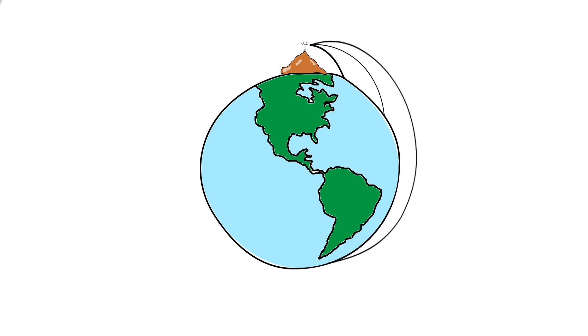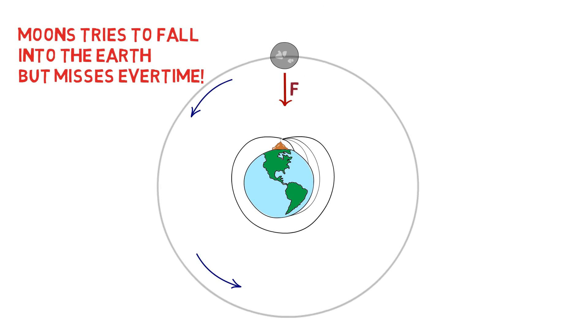If you could throw the rock hard enough, the earth would curve away from underneath the rock, so much that the rock actually never gets any closer to the ground. It goes all the way around in a circle and might hit you in the back of the head.